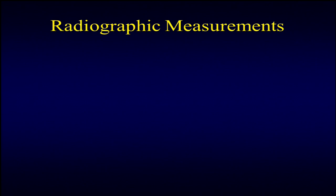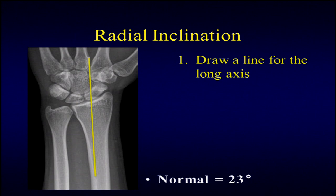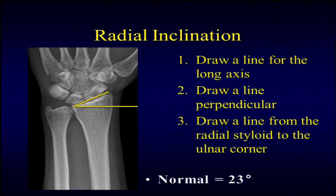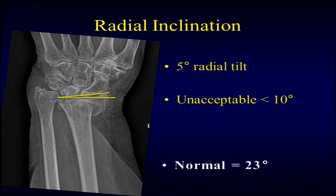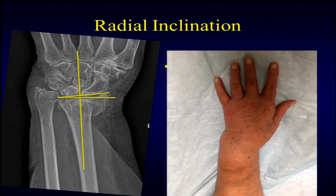Some of the standard radiographic measurements: for radial inclination, you drop a line down the long axis, draw a line perpendicular to that, then measure from the radial styloid to the ulnar aspect. Standardly this should be about 23 degrees. In this patient you can see they've lost most of their radial tilt—it's only about 5 degrees. There are numerous studies arguing how much a patient can tolerate, but I typically consider anything less than 10 degrees as operative.